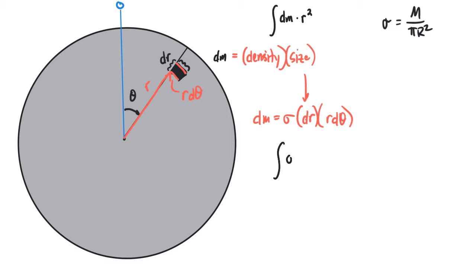So, this whole part represents the mass of a piece of our disk. Written in such a way as for me to tell you that it is dr wide, r d theta long, and sigma is the density. And then I have to multiply that by r squared.